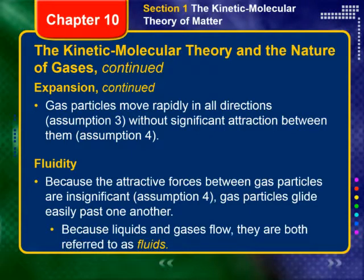Moving on to fluidity. Because the attractive forces between gas particles are insignificant — assumption four — gas particles glide easily past one another. They won't stick together or change their course based on interactions with one another. That ability to glide easily past something is what we call flowing. Because gases flow, just as liquids do, we have a term for both of them: fluids. Both gases and liquids are fluids because they flow.